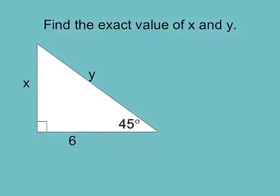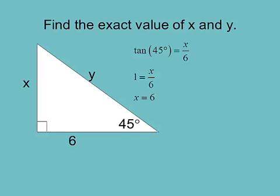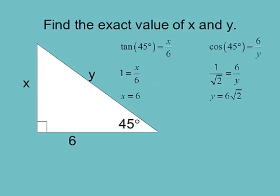The 45° triangle is nice. Tangent of 45° = x/6 — opposite over adjacent. Since tangent of 45° = 1, x = 6. That makes sense because both angles are 45°, so the two legs must be equal — that's always true for 45-45-90 triangles. Then cosine of 45° = 6/y, and since cosine of 45° = 1/√2, cross-multiplying gives y = 6√2.